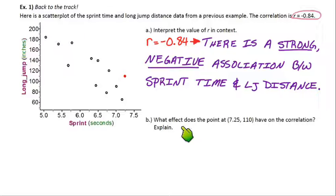Part B. What effect does the point at 7.25 comma 110 have on the correlation? Explain. On my graph, it's red. Let's circle 7.25 comma 110. That's that point right there. What you need to be able to observe is that it's a little bit more outside the overall trend than any of the other points. If it was perfect, it might be down here, trying to make a perfect line. But it's outside the overall trend.